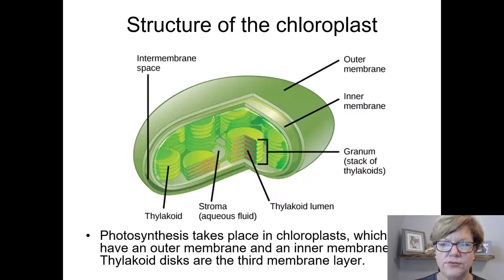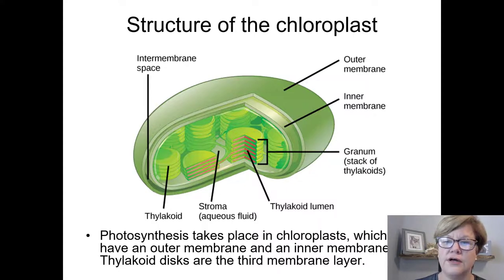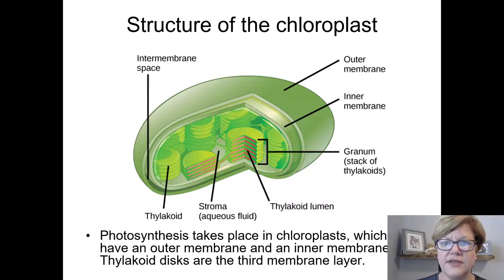In photosynthesis, the most important locations are the thylakoid membrane and the space immediately outside it called the stroma, and the space enclosed by the thylakoid membranes called the thylakoid lumen or thylakoid space. So there are three kinds of membranes and three different spaces. Make sure you can memorize and label all three membranes and three spaces on an image.